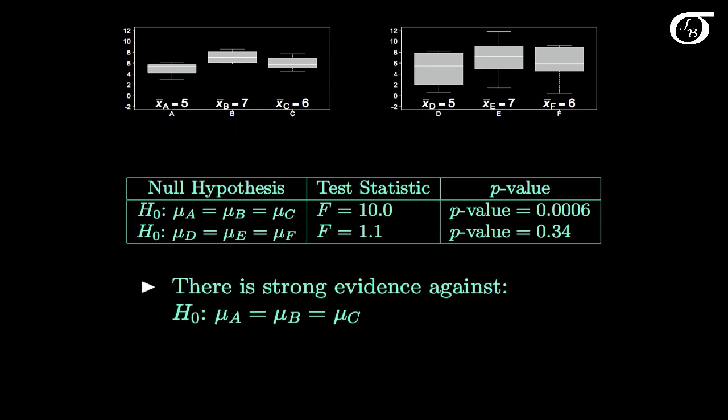And to summarize, the p-values tell us that there is strong evidence against the null hypothesis that μA and μB and μC are equal, but there is no real evidence against the null hypothesis that μD, E and F are equal.